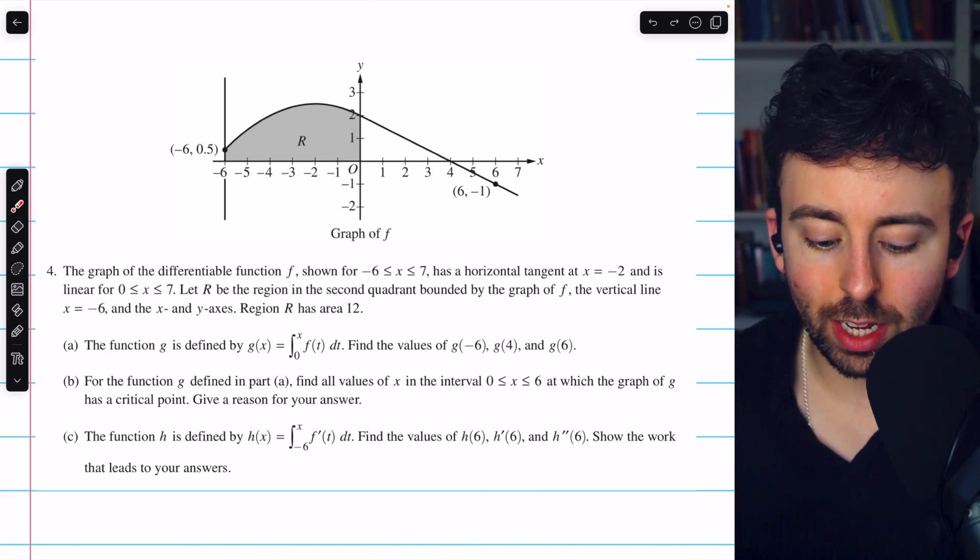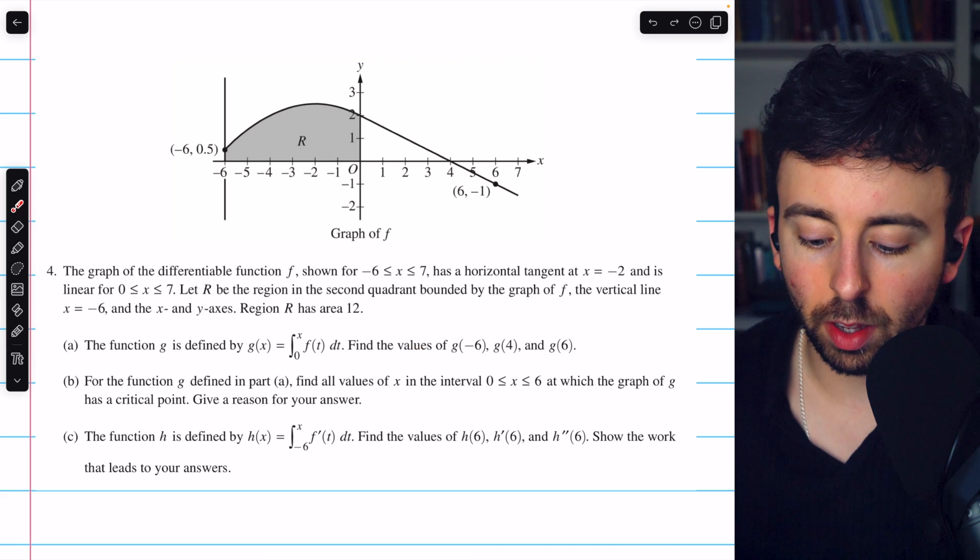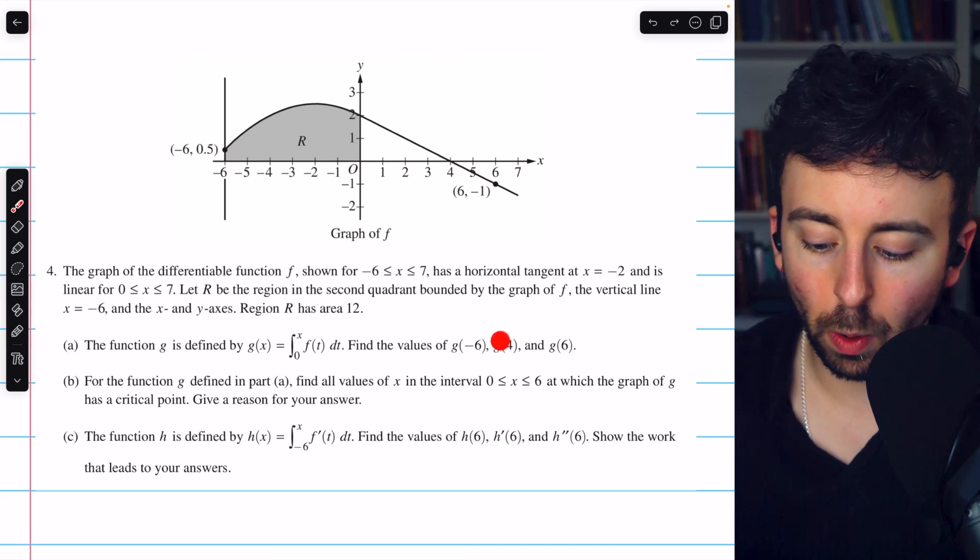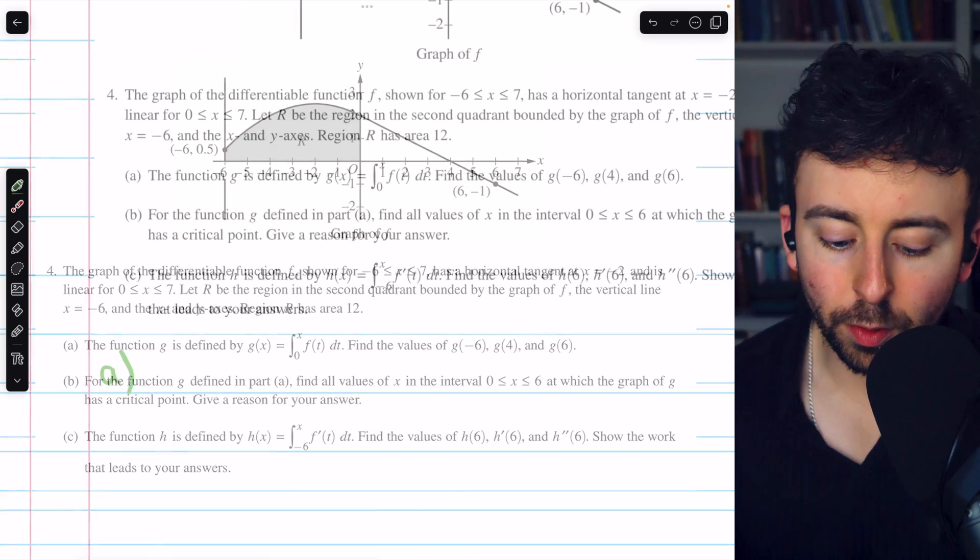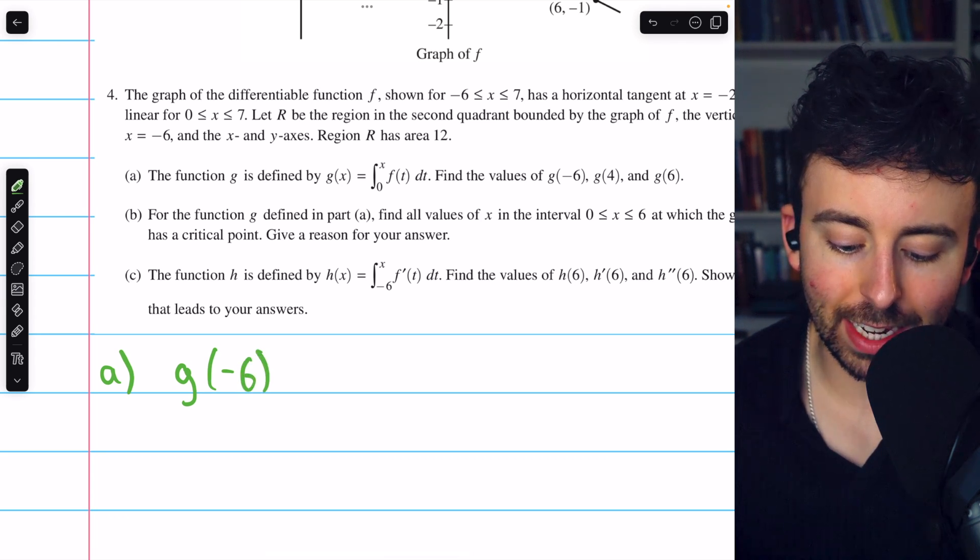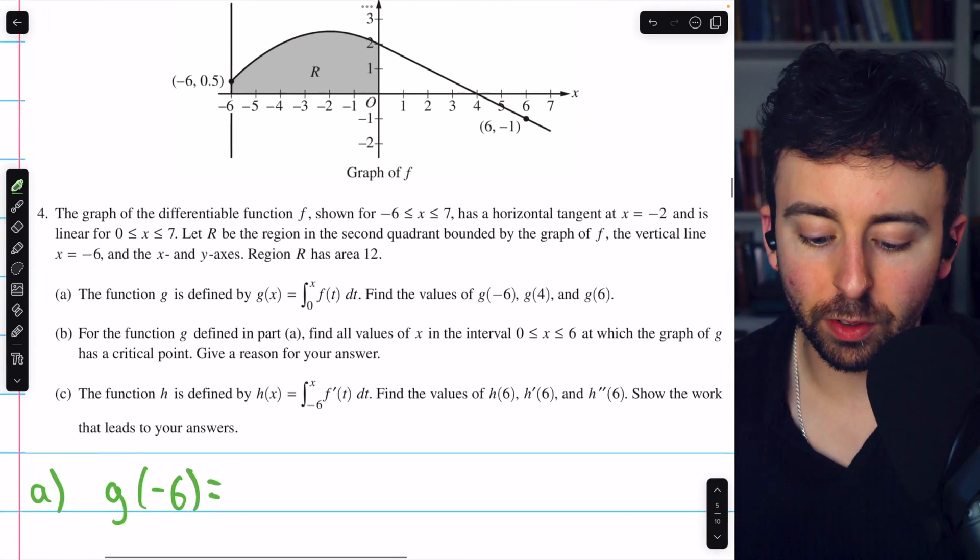Part A says the function g is defined by g of x equals the integral from 0 to x f of t dt. Find the values of g of negative 6, g of 4, and g of 6. The first one, g of negative 6, is really easy. By definition of g,